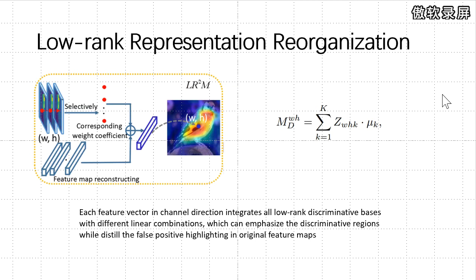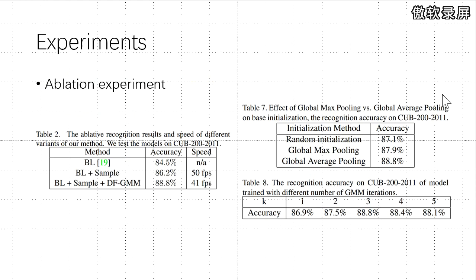The network has difficulty in selecting discriminative patch regions without spatial information. To deal with this limitation, we propose a low-rank reorganization representation mechanism (LR2M) to resume the spatial information from the low-rank discriminative bases. Ablation experiments have verified that the proposed DFGMM indeed learns the low-rank discriminative bases to precisely localize the discriminative regions by solving the problem of discriminative region diffusion.